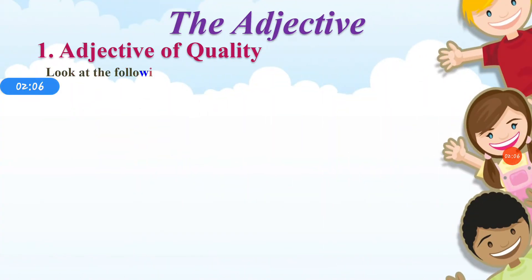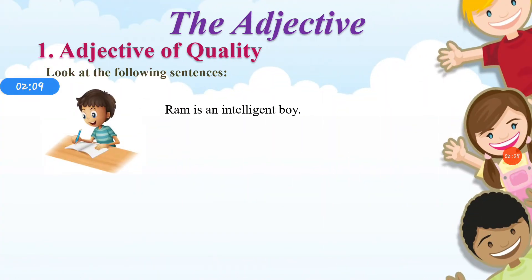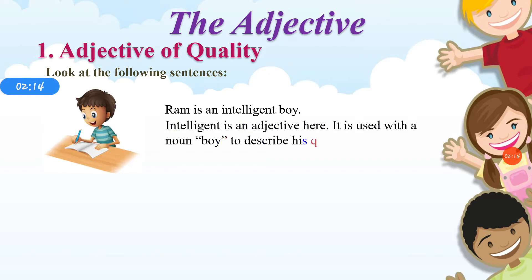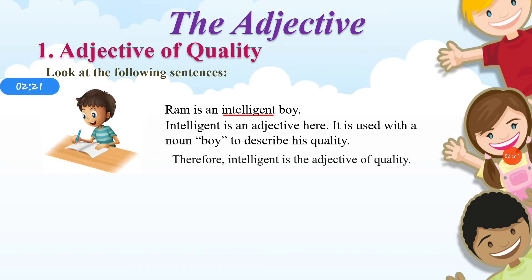Look at the following sentences. Ram is an intelligent boy. Here, 'intelligent' is an adjective. It is used with the noun 'boy' to describe his quality. Therefore, 'intelligent' is an adjective of quality.